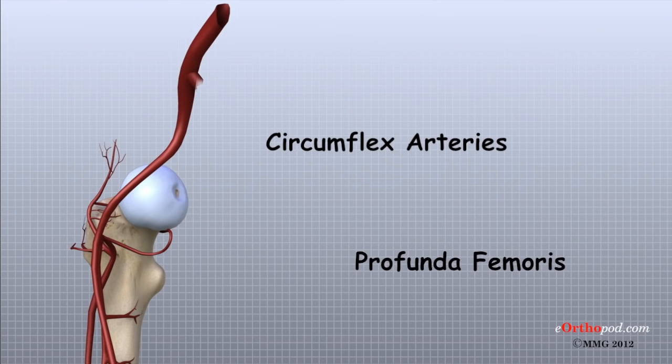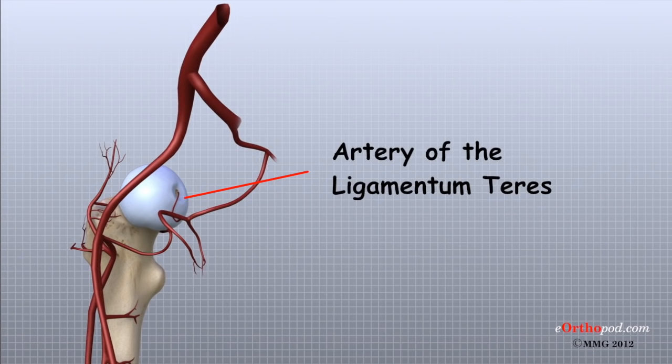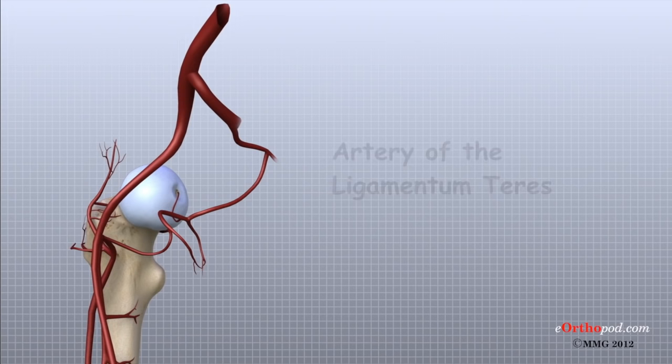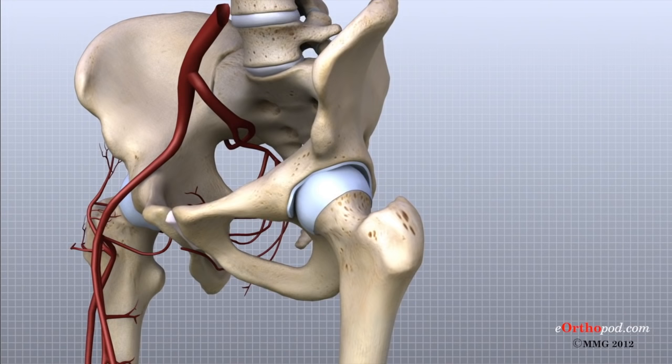As mentioned earlier, the ligamentum teres contains a small blood vessel that gives a very small supply of blood to the top of the femoral head. Other small vessels form within the pelvis and supply the back portion of the buttocks and hip.